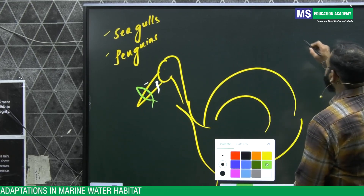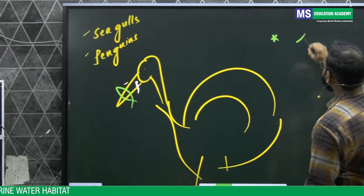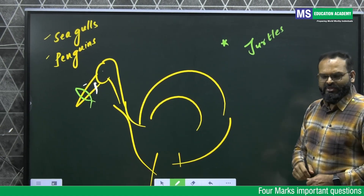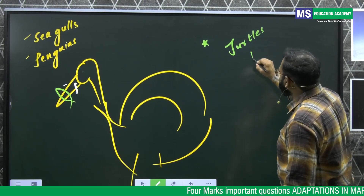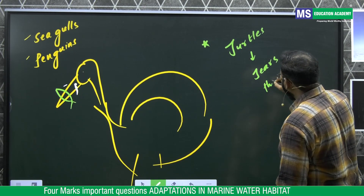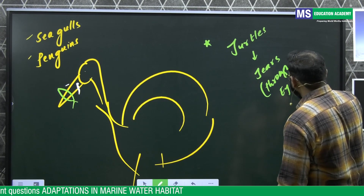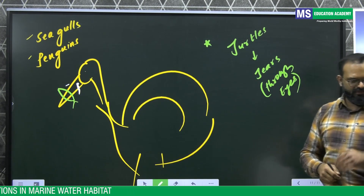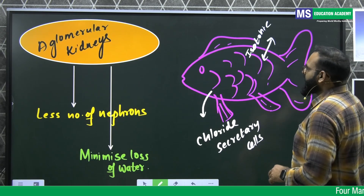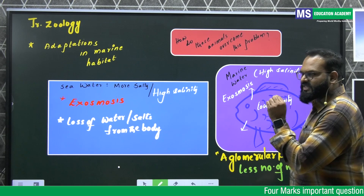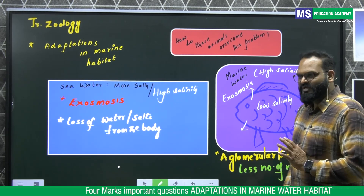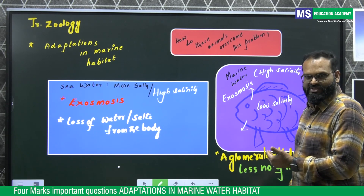When we take the example of sea turtles, they eliminate excess salts in the form of tears through their eyes. That covers the adaptations observed in animals living in marine habitat — the problem of exosmosis and the adaptations to overcome it.